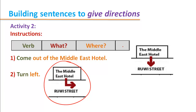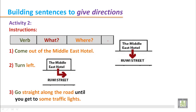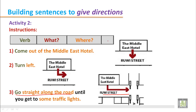So: come out of the Middle East Hotel, then turn left. Instruction three: go straight along the road until you get to some traffic lights. From the Middle East Hotel, come out, then turn left, and go straight along the road until you get to some traffic lights. In the picture we can find these are the traffic lights, so go straight until you reach the traffic lights.